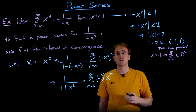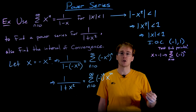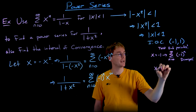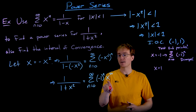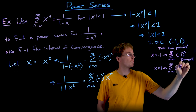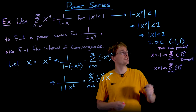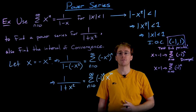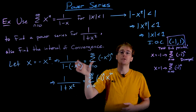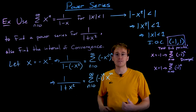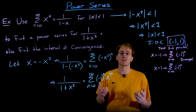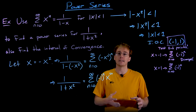At x = -1, we get (-1)ⁿ times (-1)^(2n) = (-1)ⁿ times 1, giving the series Σ(-1)ⁿ, which diverges by the divergence test since its terms don't go to 0. At x = 1, the same reduction occurs and we get the same divergent series. So the interval of convergence is the open interval (-1, 1), excluding both endpoints. This is one example of manipulating a known power series — via substitution, derivatives, integrals, or multiplication — to create a new one.